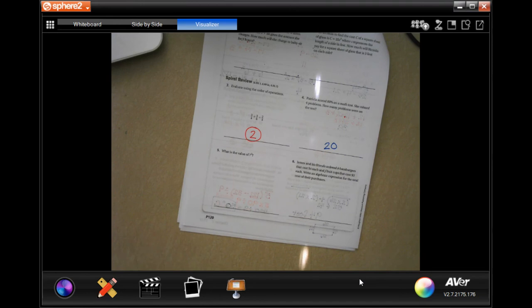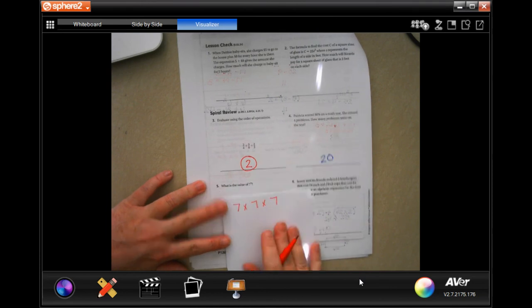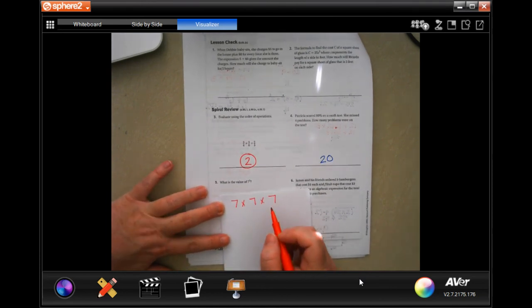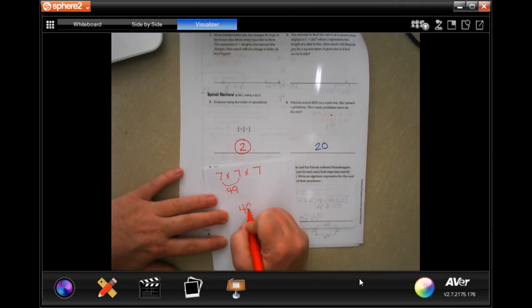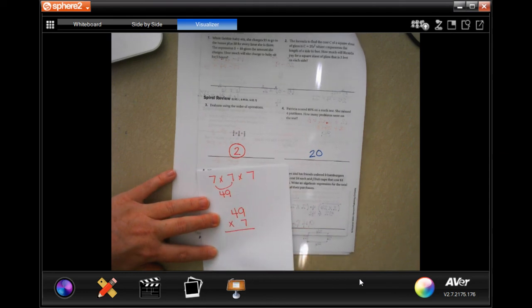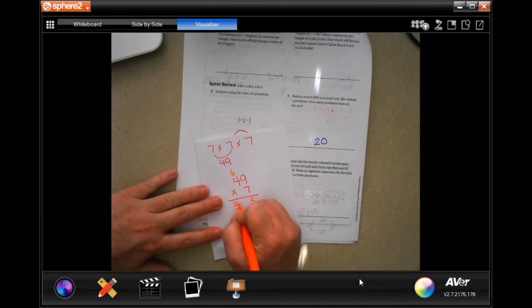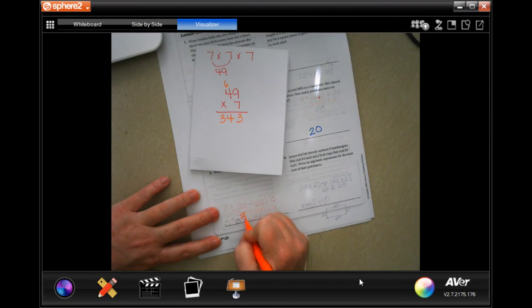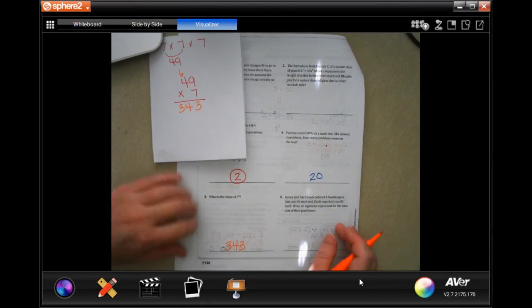All right. So what is the value of 7 to the third? Well, that means it's 7 times 7 times 7. It is not 7 times 3. It is 3 sevens all multiplied together. I know that 7 times 7 is 49 because that's one of my math facts. So now I'm just going to do 49 times 7. So 7 times 9 is 63. Carry the 6. 7 times 4 is 28 plus 6 is going to be 34. 343. Don't need a label on that. It's not giving us any words to work with. So don't need a label.